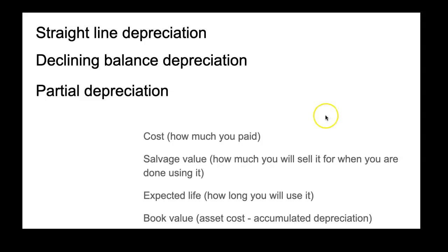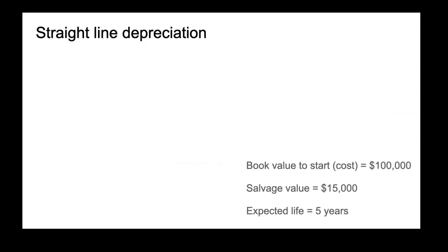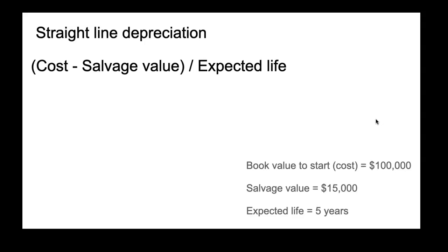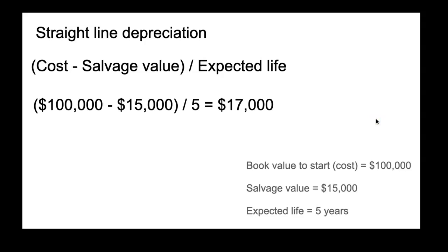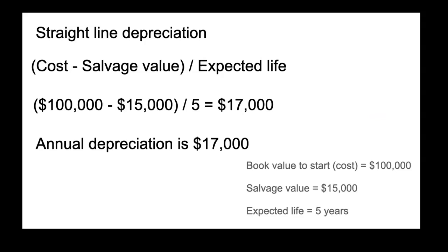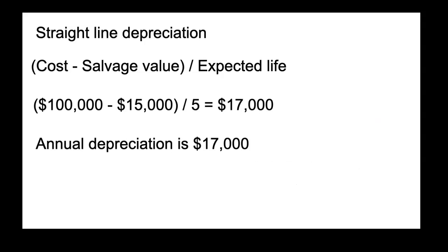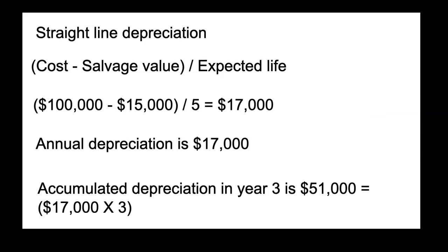For declining balance we also need the book value, which is the total cost of the asset minus the accumulated depreciation each year. For straight line: if I paid $100,000 and will sell it for $15,000 in five years, the formula is cost minus salvage value divided by expected life — so $100,000 minus $15,000 equals $85,000, divided by 5, which is $17,000 per year. At the end of year three, accumulated depreciation is $51,000.